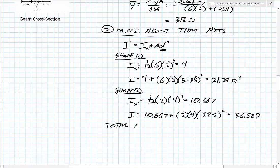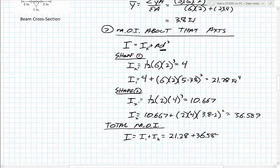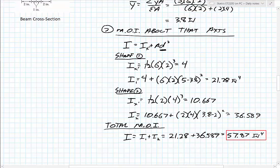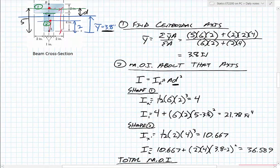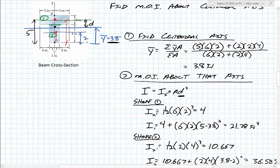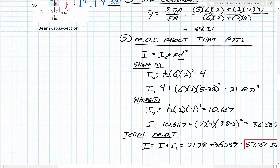The total moment of inertia is the sum of both shapes: approximately 21.28 plus 36.589, giving about 57.87 inches to the fourth. I hope you found that helpful. Give the homework a shot — most problems end up being like this, and sometimes there's one less step where you don't have to find the centroidal axis because it'll be given. Good luck, and let me know if you have any questions.